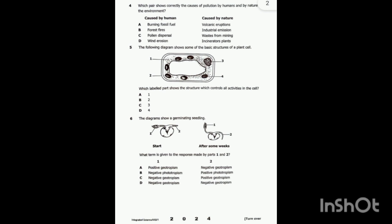Question five: the diagram shows some of the basic structures of a plant cell. Which labeled part shows the structure which controls all cell activities? They want us to identify the structure that controls all cell activities, which is called the nucleus.